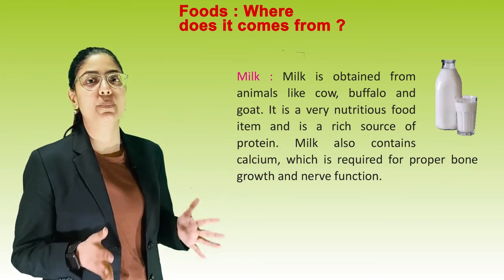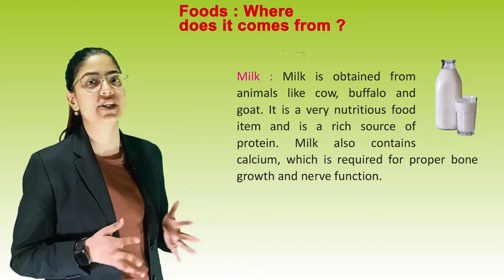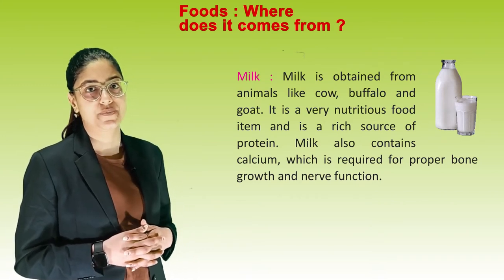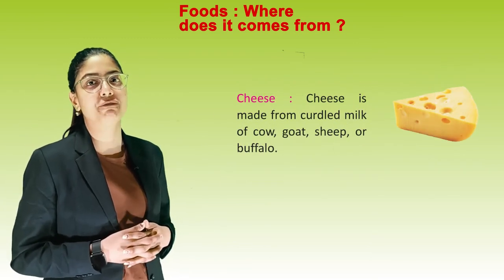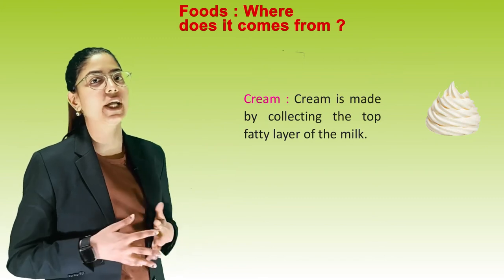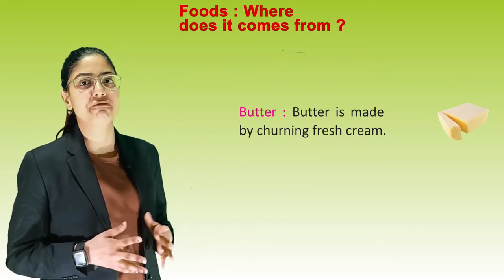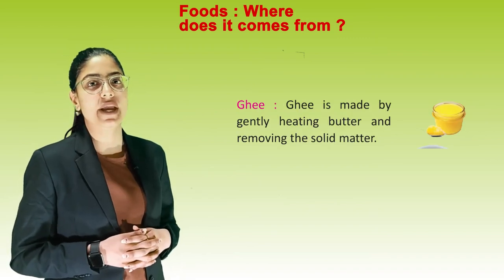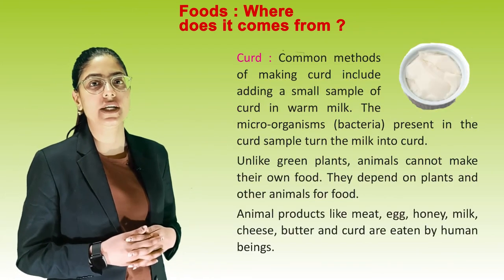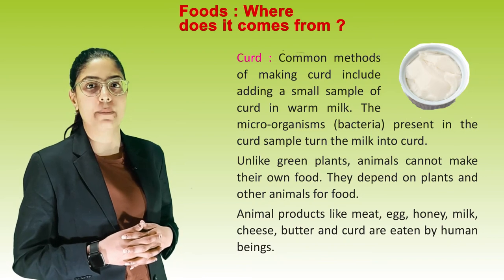Milk: milk is obtained from animals like cow, buffalo and goat. It is a very nutritious food item and a rich source of protein. Milk also contains calcium which is required for proper bone growth and nerve functions. Cheese is made from curdled milk of cow, goat, sheep or buffalo. Cream is made by collecting the top fatty layer of the milk. Butter is made by churning fresh cream. Ghee is made by gently heating butter and removing the solid matter. Curd: a common method of making curd includes adding a small sample of curd in warm milk; the bacteria present in the curd sample turn the milk into curd.